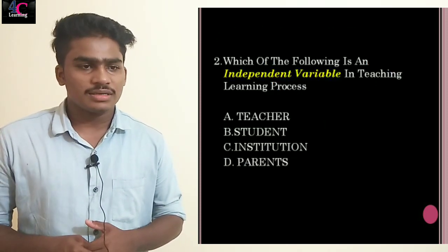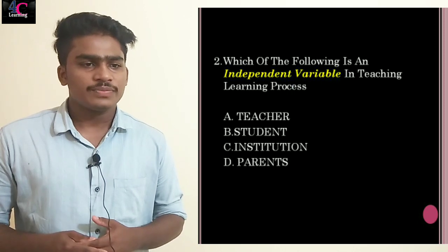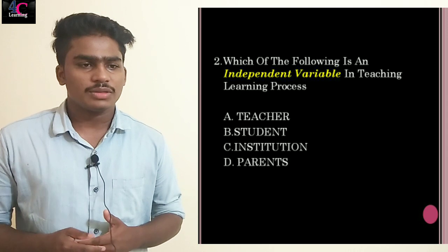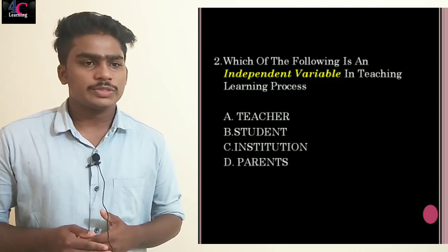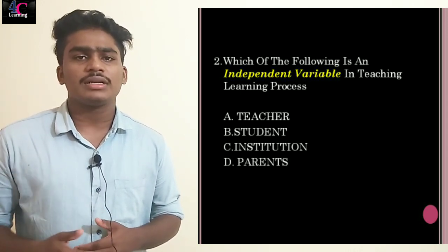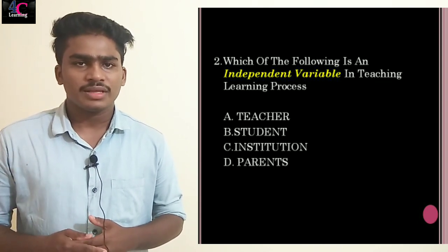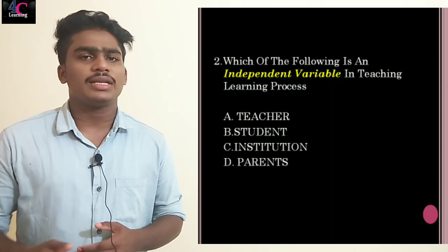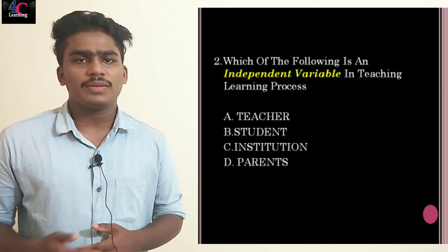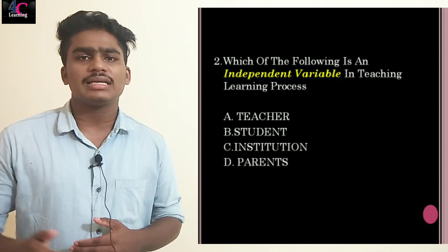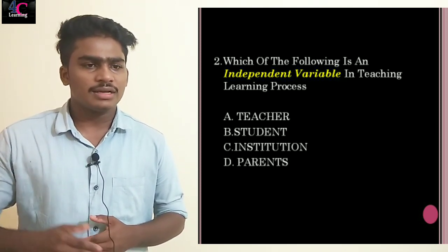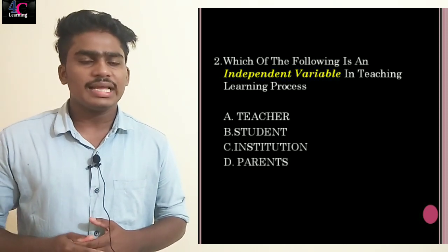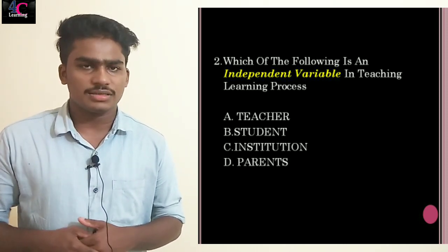Second question: Which of the following is the independent variable in the teaching-learning process? Option A: teacher, Option B: students, Option C: institution, Option D: parents. In the teaching-learning process, students is a dependent variable, teacher is an independent variable, and various methods of teaching are the intervening variable. So option A, teacher, is the correct answer.